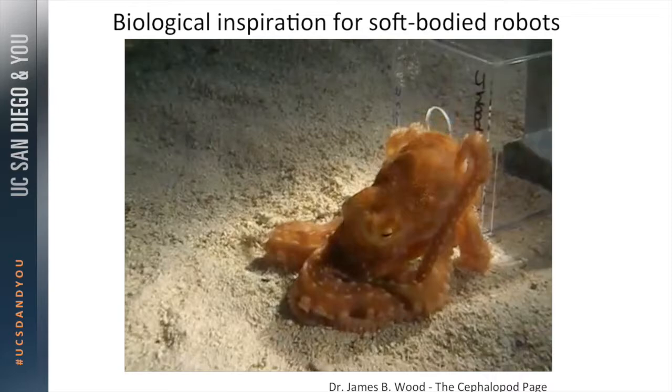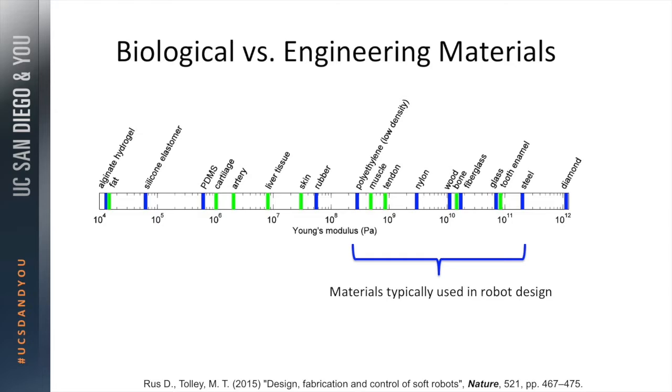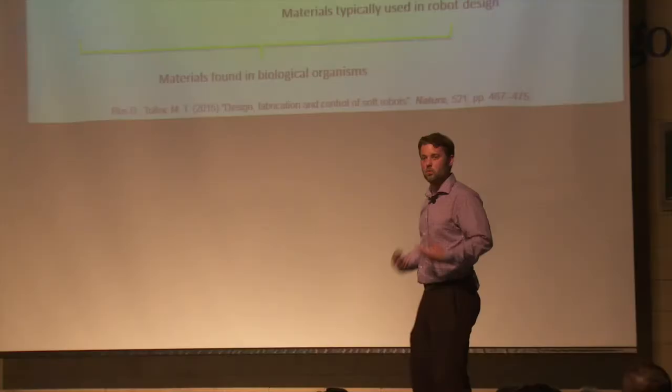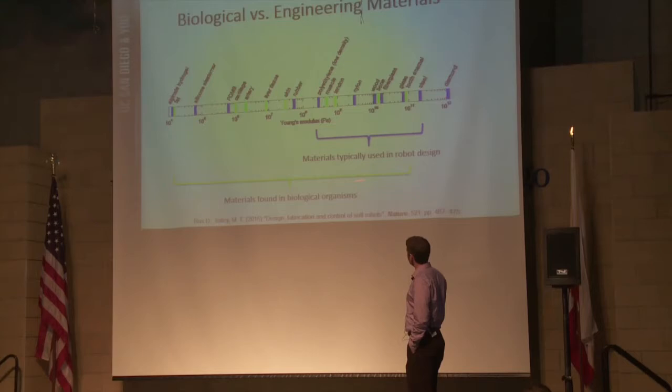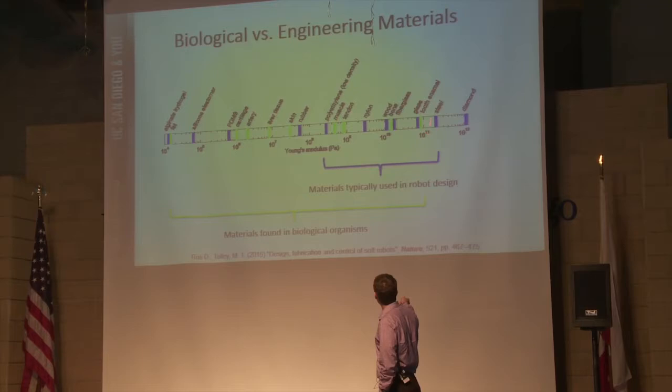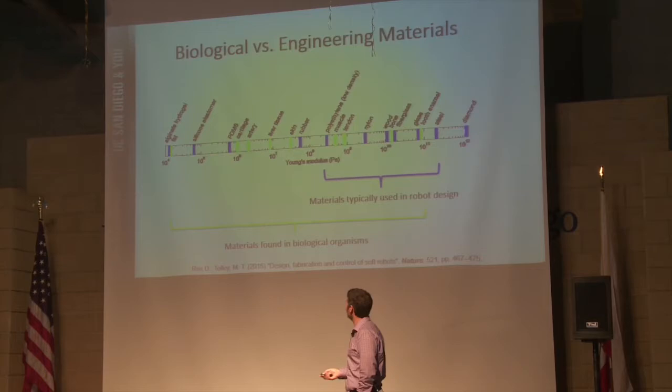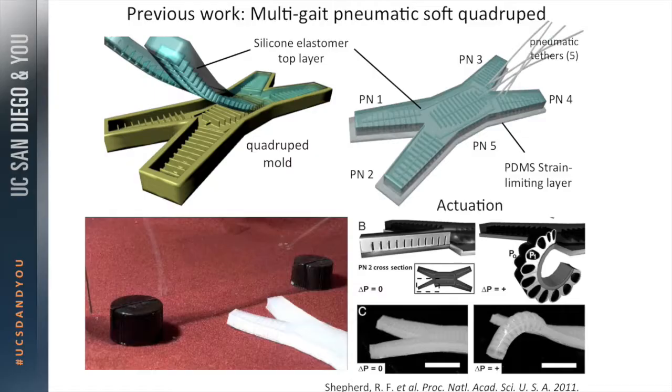So inspired by this, we've started to think about the materials we use in robotics. So if you look at traditionally, this is one axis which is Young's modulus or stiffness. There are many ways to think about materials, this is one of them. And robots are typically designed out of things like steel, other rigid materials, hard plastics. But if you look at the materials that we're made out of, that natural organisms are made out of, we really use a much broader range of stiffnesses, everything from really hard teeth down to things like cartilage and fat.